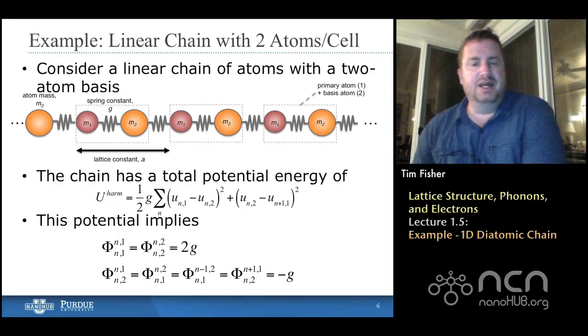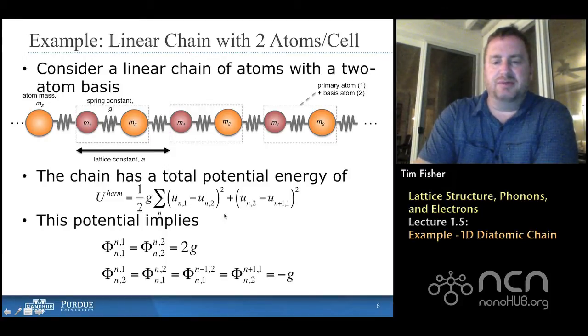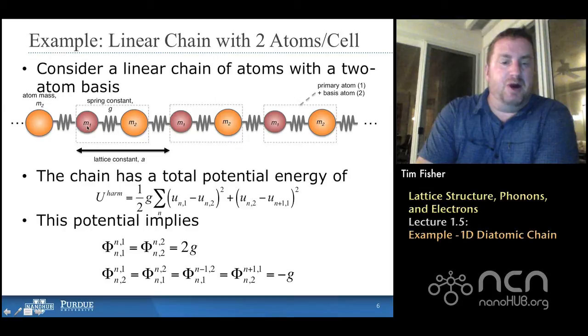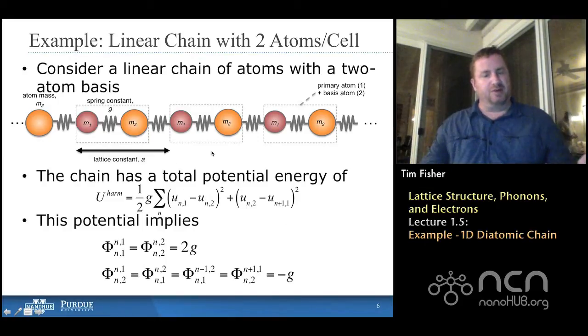We go back to our expression for the potential energy, the harmonic potential energy. In this case, we have other terms. These other terms come from the fact that in each unit cell, we have two atoms. And so the M2 atom will be interacting with an M1 atom on its right, an M1 atom on its left. And the M1 atom will be interacting with an M2 atom on its left and an M2 atom on its right. And we have to include all of those terms and then sum over everything to get the full harmonic potential.